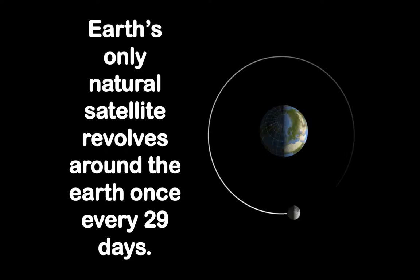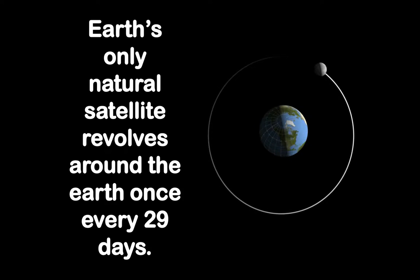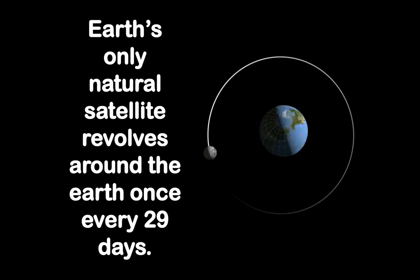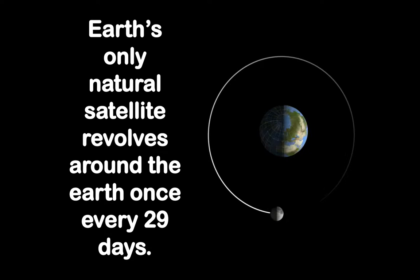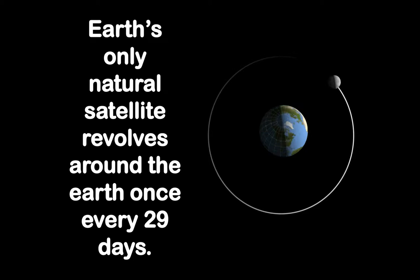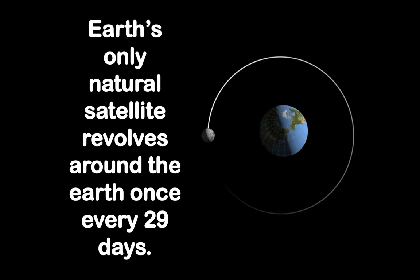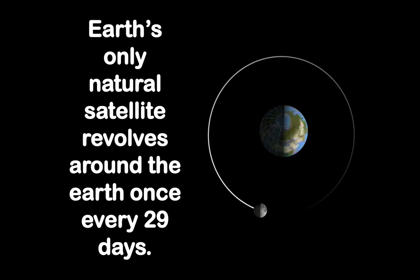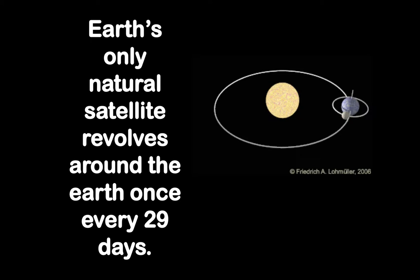The moon travels around the Earth in a pattern called a revolution — it revolves around the Earth. And because the moon does not make its own light, it only reflects the light from the sun. The appearance of the moon changes as it moves around the planet, and it goes around the planet every 29 days.